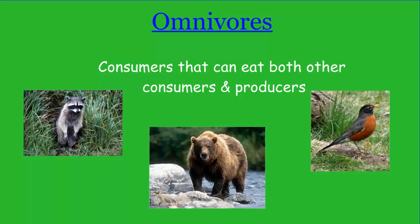Omnivores are consumers that can do both what carnivores and herbivores can do — they can consume other consumers and also eat producers. Some examples of omnivores would be the raccoon, many species of bears that eat fish and other wildlife as well as berries and leaves, the red-breasted robin, and humans. We as humans are omnivores.